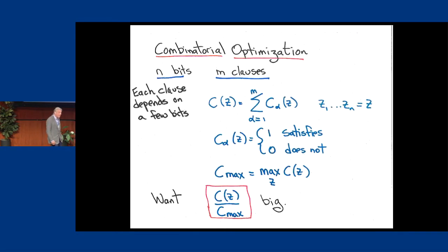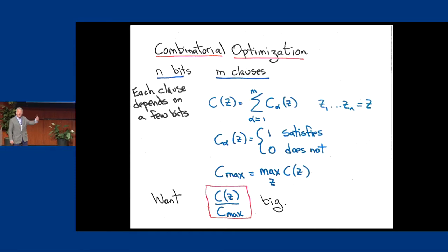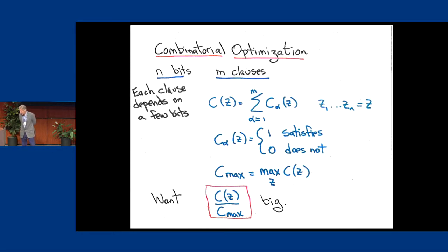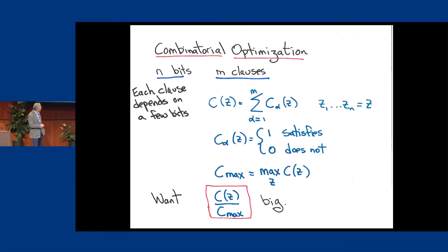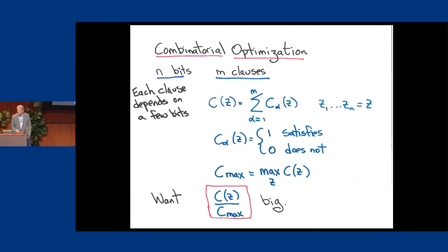I'm going to be interested in something a little less ambitious, which is to find a string which gives you a high value of this ratio — the cost function on the string Z divided by the maximum value. This is called the approximation ratio. When I talk about approximation, I'm talking about it in the very specific context of looking for a string whose output approximates the maximum of this function. If you could achieve one here, you'd be very happy, but sometimes the best is the enemy of the good, and we really want to look for a good solution, not necessarily the best.